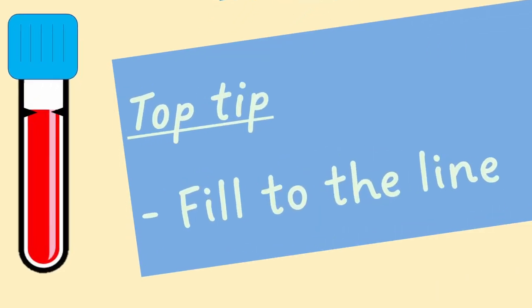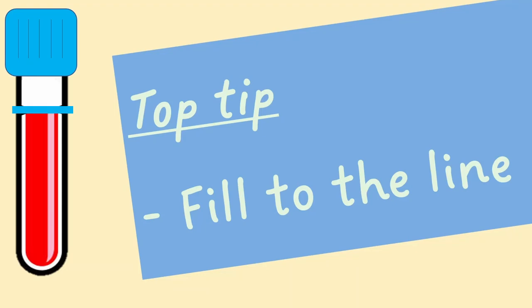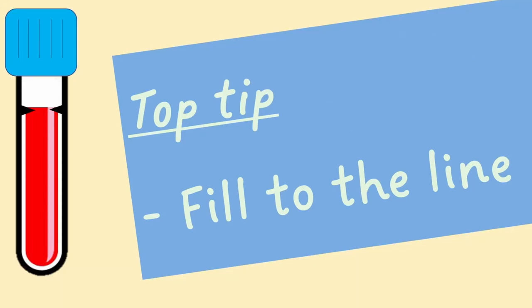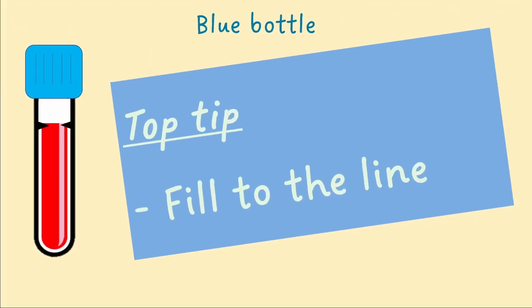A top tip for the blue bottle is to always fill it to the line indicated. This is because the ratio of anticoagulant to blood is important and can interfere with test results if over or under filled. This is why it's important to fill the blue bottle first so you can be sure to fill it with enough blood to reach the line.